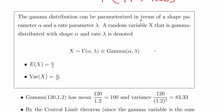The gamma distribution can be parameterized in terms of a shape parameter alpha and a rate parameter lambda. So this is the rate parameter: shape and rate, alpha and lambda. Sometimes this might be denoted beta.